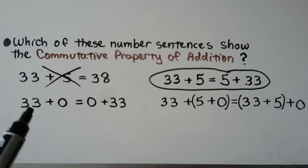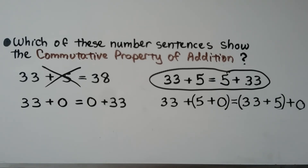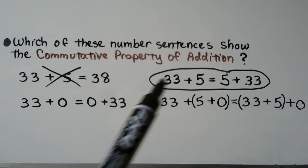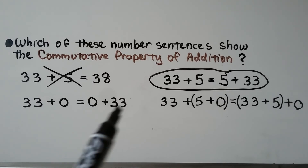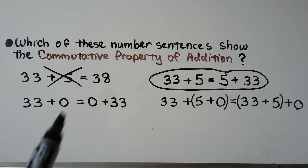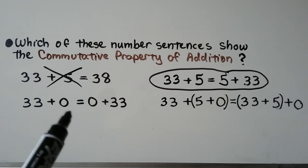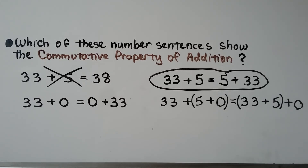How about 33 plus 0 is equal to 0 plus 33? Does that show the commutative property? Yes — they're being added in different orders and equal the same thing. This side equals 33 and this side equals 33, so they're equal to each other. This one is showing the commutative property, and because it's being added to 0, it could also be the identity property, couldn't it?